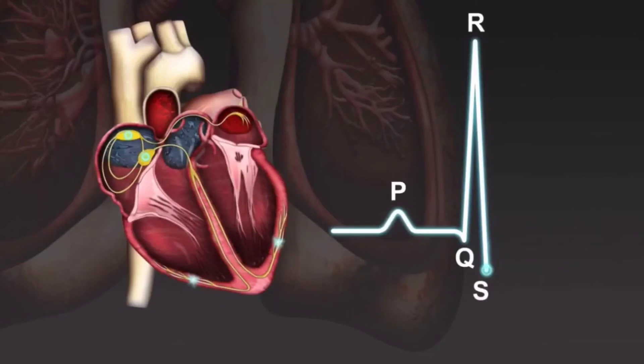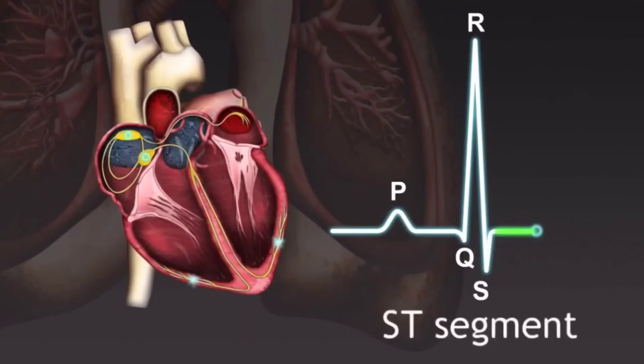The impulse remains unchanged for a moment as the ventricles remain depolarized. This gives rise to another flat section called the ST segment.